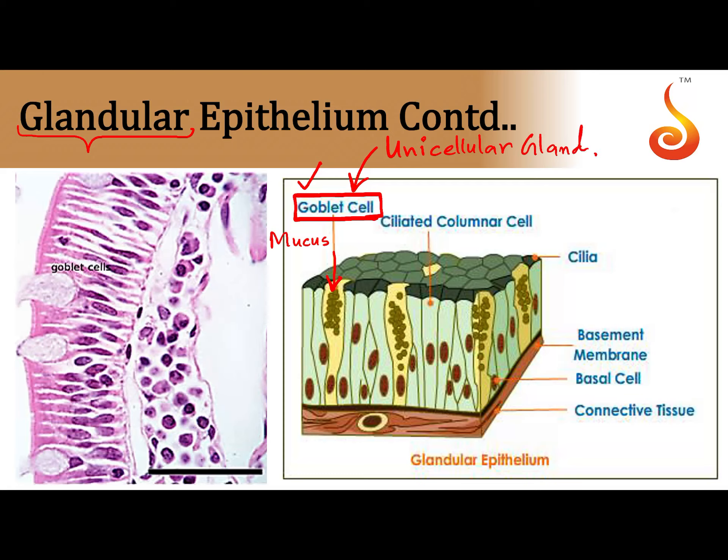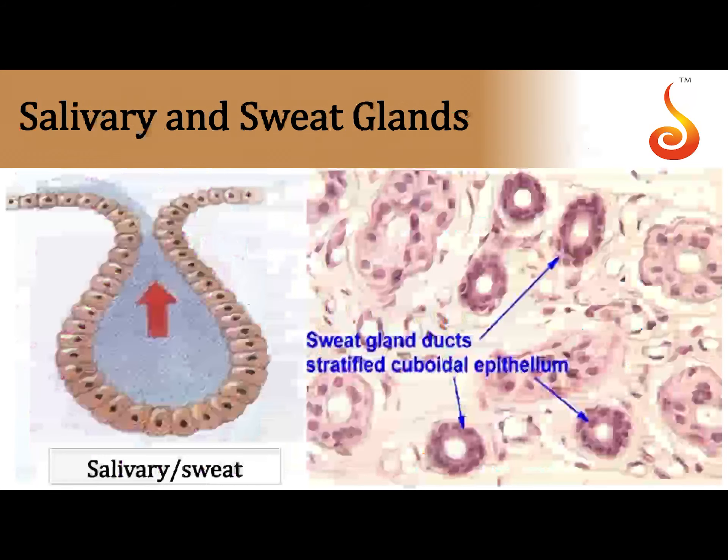Goblet cells are found in the lining of your small intestine, your stomach, and your respiratory tract — that is, the inner wall of your respiratory system and your digestive system.